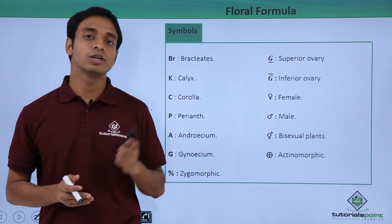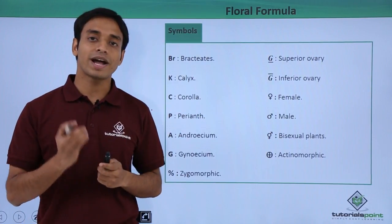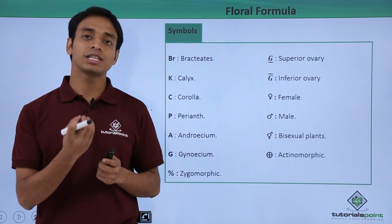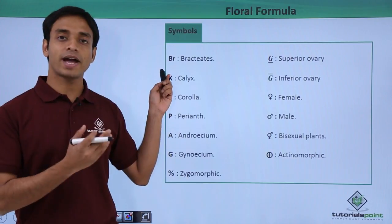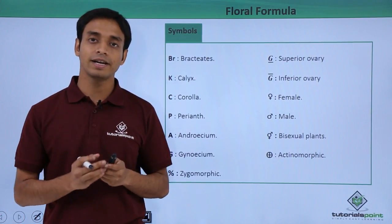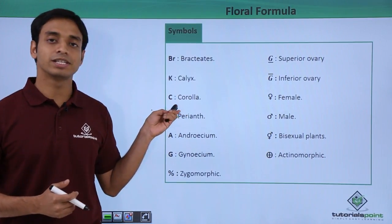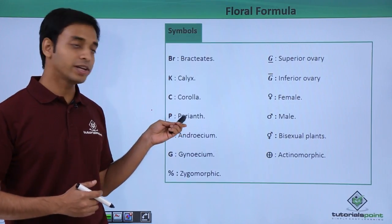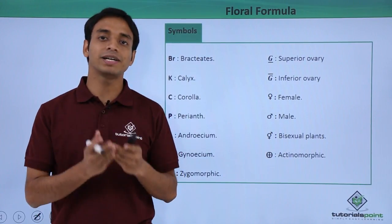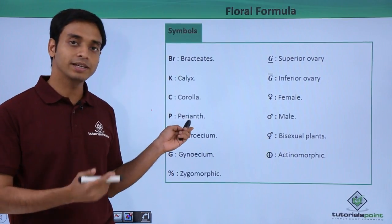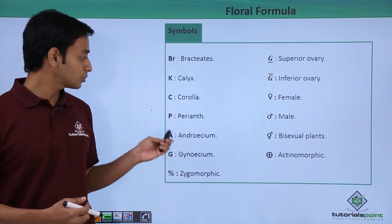Some of the symbols used in the floral formula: 'Br' stands for bractate, meaning the presence of a bract — a small leaf-like structure at the base of the pedicel or stalk of the flower. 'K' means calyx, that is the sepals. Capital 'C' means corolla, that is the petals. 'P' stands for perianth, which is when the sepals and petals are fused together. Capital 'A' represents the male part, the androecium.